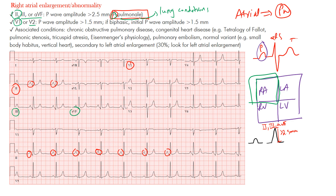The other lead to look at is V1 or V2. You're looking at the initial portion of the P-wave — remember, you can see biphasic P-waves in leads V1 and V2. The initial portion of the P-wave represents the right atrium depolarizing, and the second, terminal portion represents the left atrium depolarizing.